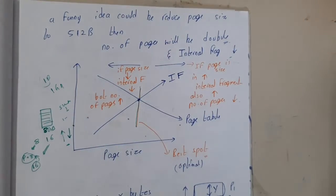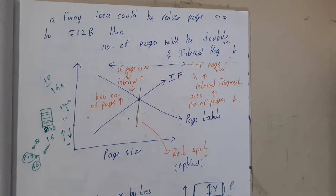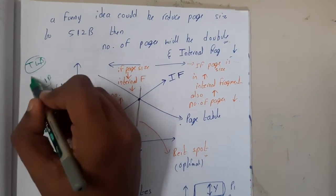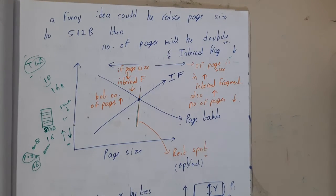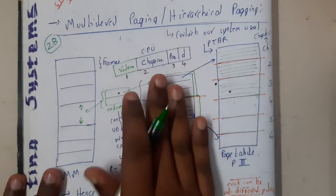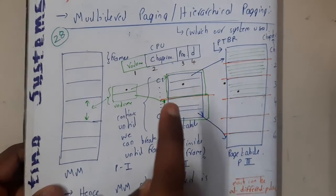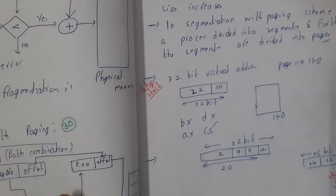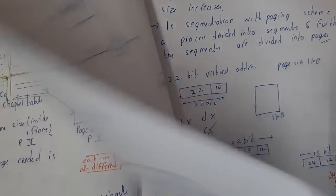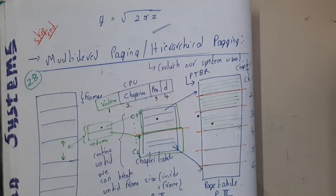To summarize: the speed problem is resolved using TLB, and internal fragmentation is managed by choosing an ideal page size. In real systems today, we do not use only traditional paging — we use multi-level paging combined with segmentation. The next few lectures will cover multi-level paging, segmentation, and segmentation with paging. These concepts are short and interesting, so let us meet in the next lecture.